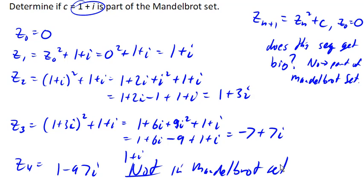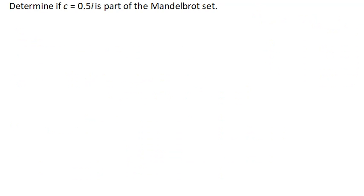Let's try another point. What if c is 0.5i? z_1 would be 0 squared plus 0.5i, which is 0.5i.